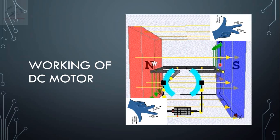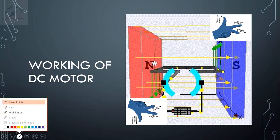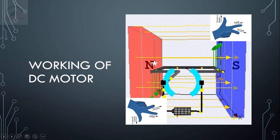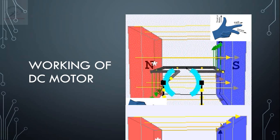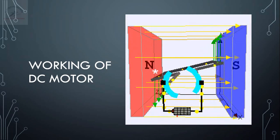Applying Fleming's left hand rule to this other conductor: the direction of the field is given by the forefinger, the direction of the current which is outward is given by the center finger, and the thumb finger gives the direction of thrust. So this conductor moves downwards and this conductor moves upwards, thus creating a rotating effect. This rotating effect we call a couple, which is very much necessary for the rotation of a motor.